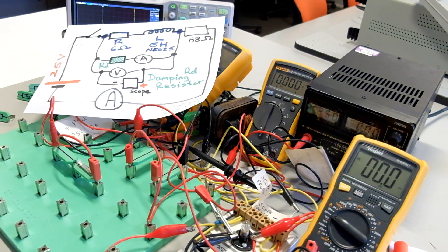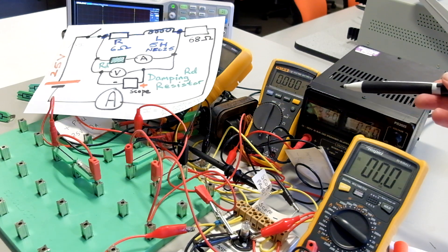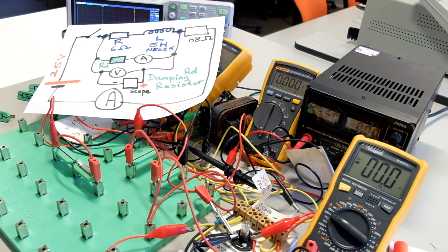When current changes in a coil, in this example switching on or off our 25 volt DC supply, the self-induced EMF around the coil will have a polarity which will oppose the change that caused it, which is Lenz's law, essentially energy conservation.